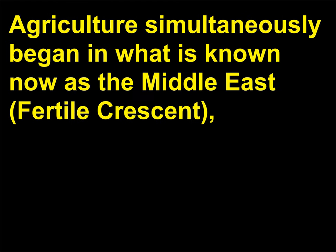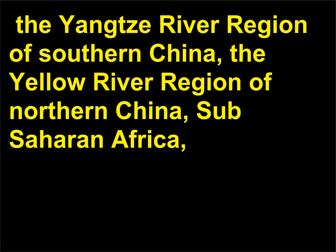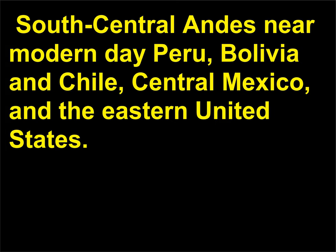Where did agriculture begin? Agriculture simultaneously began in what is now known as the Middle East Fertile Crescent, the Yangtze River region of southern China, the Yellow River region of northern China, sub-Saharan Africa, the South-Central Andes near modern-day Peru, Bolivia, and Chile, central Mexico, and the eastern United States.